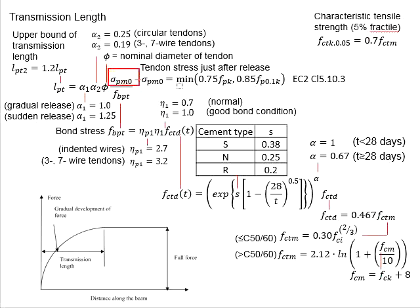Sigma_pm0 represents the tendon stress just after jacking force is released. It is the smaller value of 0.75 times f_pk or 0.85 times f_p0.1k.